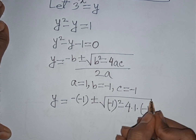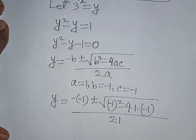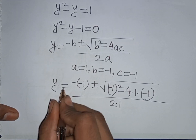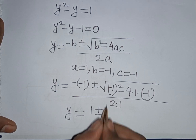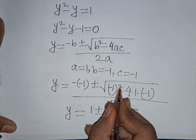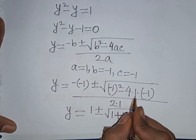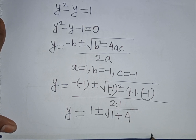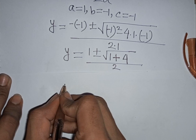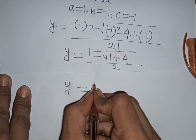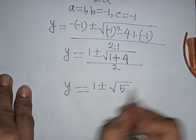With a equals 1, b equals negative 1, and c equals negative 1, we get y equals positive 1 plus or minus the square root of (negative 1)^2 minus 4 times 1 times negative 1, all divided by 2 times 1. That simplifies to y equals 1 plus or minus square root of 1 plus 4, which is square root of 5, divided by 2.